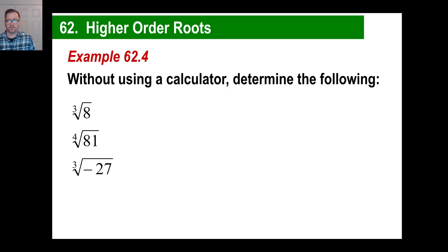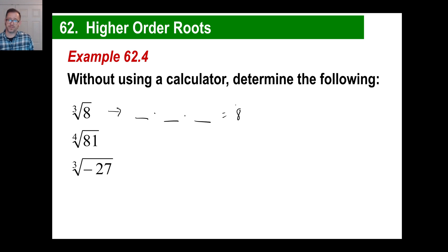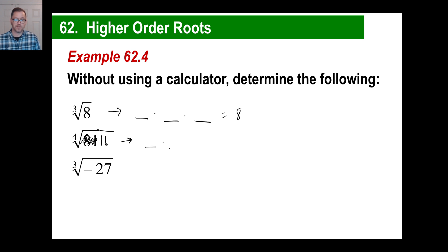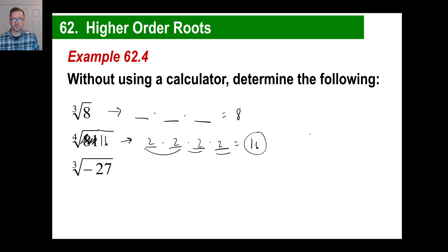Without using a calculator, determine the following. The cube root of 8 — something times something times something equals 8, and the answer is 2. Now the fourth root of 16: pause and try to figure it out. Something times something times something times something equals 16. Try 1: doesn't work. Try 2: 2×2=4, 4×2=8, 8×2=16. Yes! The fourth root of 16 is 2.